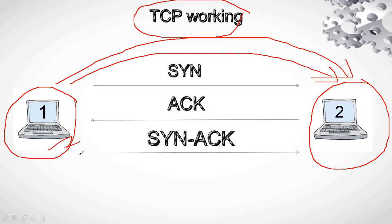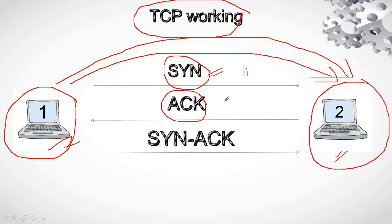What happens is that your PC will first send a Synchronization Packet, denoted as SYN, with a certain number in it — let's say 11. And once that Synchronization Packet is received by the PC at the other end, it will send back an Acknowledgement Packet and it will increment that number by 1, so the number changes to 12.